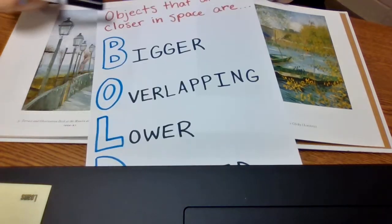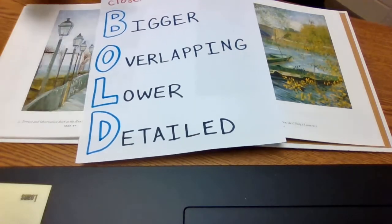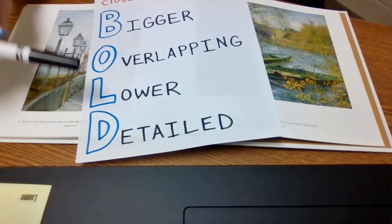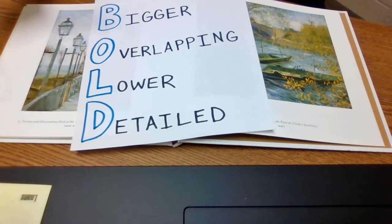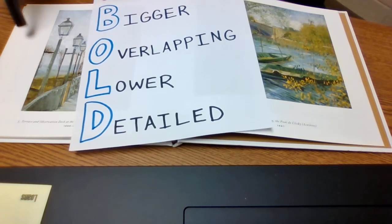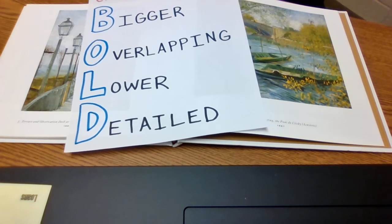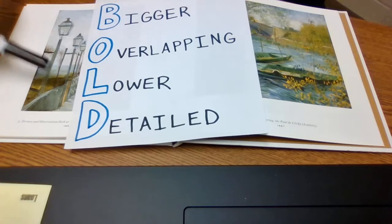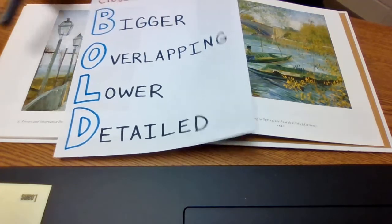So, we're looking for bold space — B-O-L-D: Bigger, Overlapping, Lower, Detailed. If an object is close to you in space, you're probably going to see these four things — if not just one of them, if not all of them.